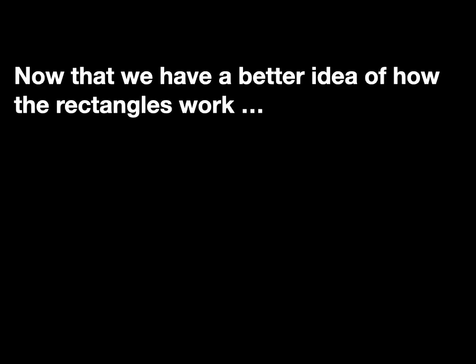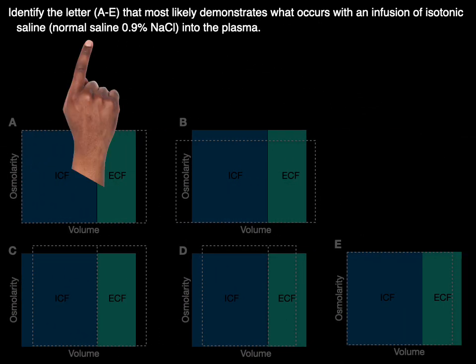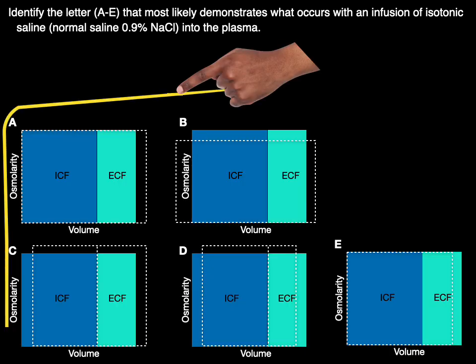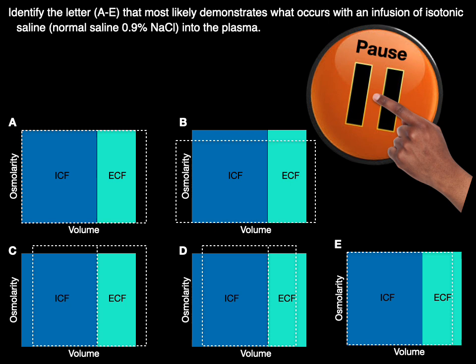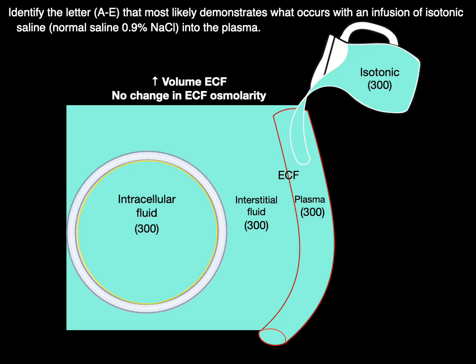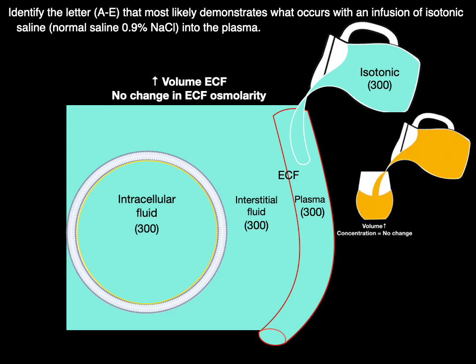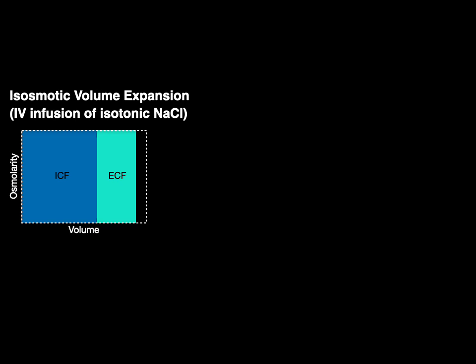Now that we have a better idea about how the rectangles work, let's go through some problem sets together. Question number one: identify the letter that most likely demonstrates what occurs with an infusion of isotonic saline into the plasma, using letters A through E. We're going to add isotonic solution to the plasma — the volume of both the plasma and interstitial fluid get larger, but there's no change in osmolarity. Which letter shows this change? The letter A does. This is showing an isosmotic volume expansion, like an IV infusion of isotonic sodium chloride.